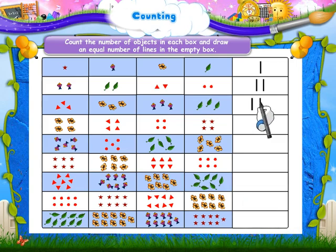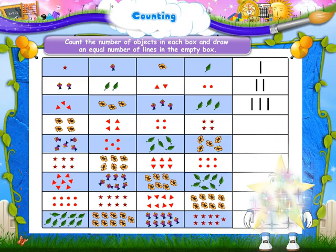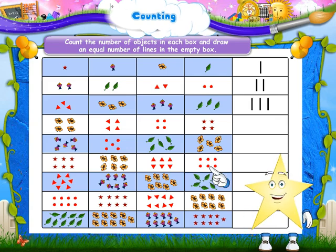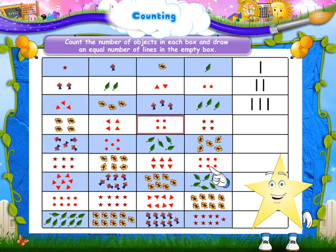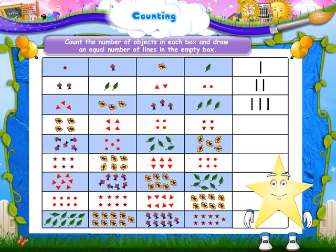Good! Next is four flowers. Four triangles. Four dots. Four stars. So draw four lines in the box.